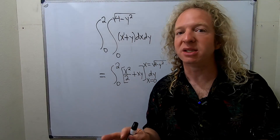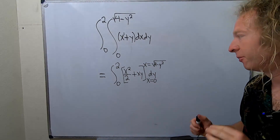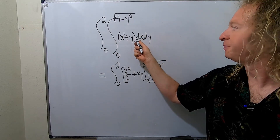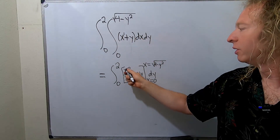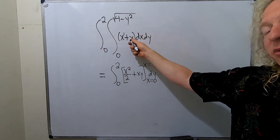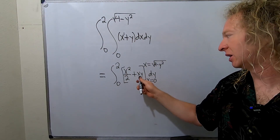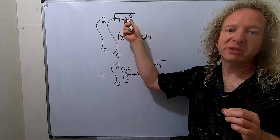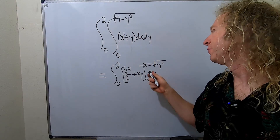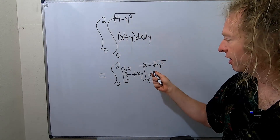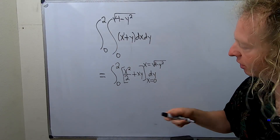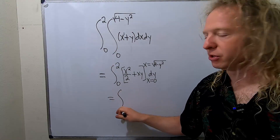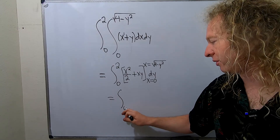Because now when you go to plug stuff in you know you have to replace X. If I didn't put the X there it's really easy to mess up. So we integrated with respect to X and got X squared over 2 plus XY, with X limits of integration from X equals 0 to the upper bound, and we still have the DY.